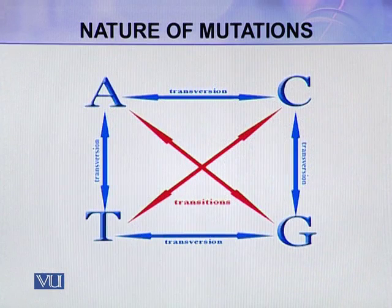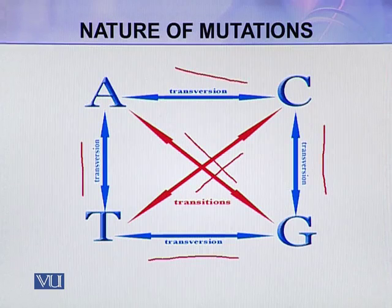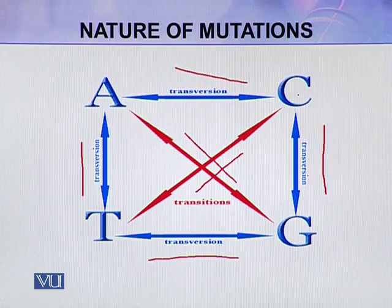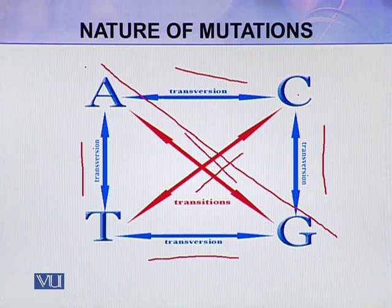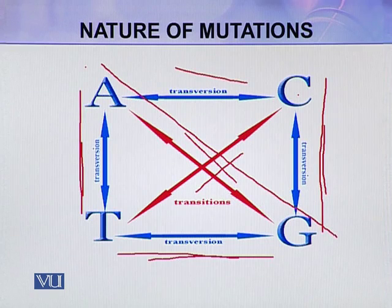In this picture, all the blue lines are transversions and all the red lines are transitions. If T is substituted for C, this is a transition. If A is substituted for G, this is a transition. If C is substituted for G, this is a transversion. If G is substituted for T, this is also a transversion. If A is substituted for T or A is substituted for C, these are also transversions.